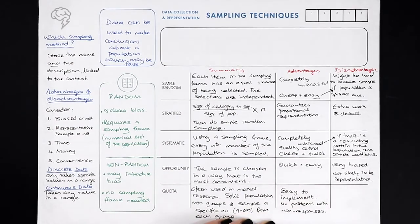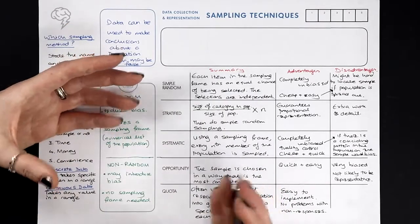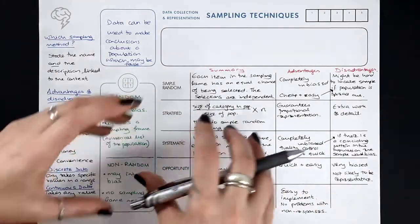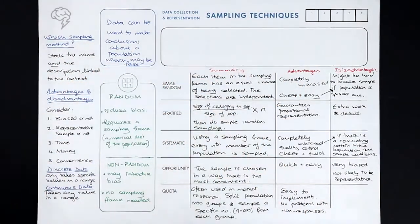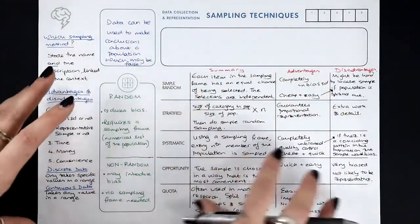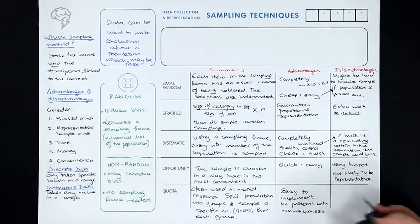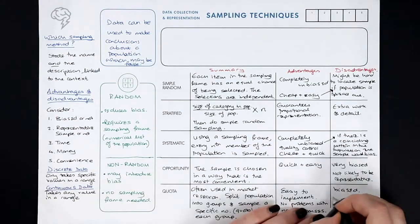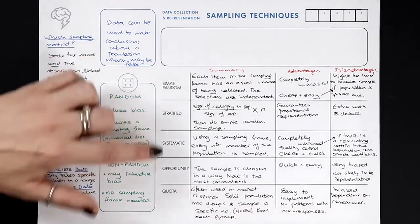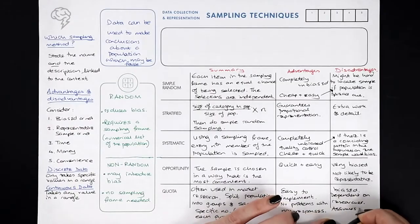Quota sampling allows generalized conclusions about different groups because data is collected separately by group, making comparisons easy — similar to stratified sampling. However, because selection within strata is essentially opportunity-based, it is biased and dependent on the interviewer. Both stratified and quota sampling also assume you can actually divide the population into distinct groups.